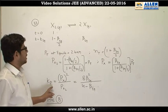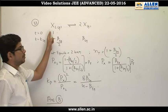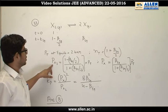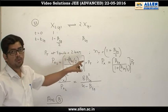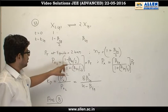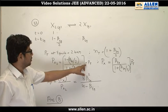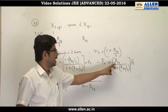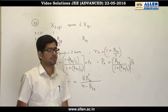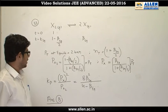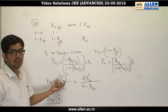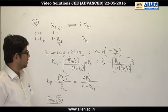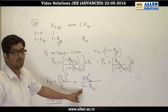Kp = (partial pressure of x)² / (partial pressure of x₂). x₂ ka partial pressure = mole fraction of x₂ × total pressure = [x₂ moles / total moles] × total pressure. Similarly x ka partial pressure = mole fraction of x × total pressure. Substituting and simplifying, Kp = 8 beta_eq² / (4 − beta_eq). Therefore the answer to question 33 is B.